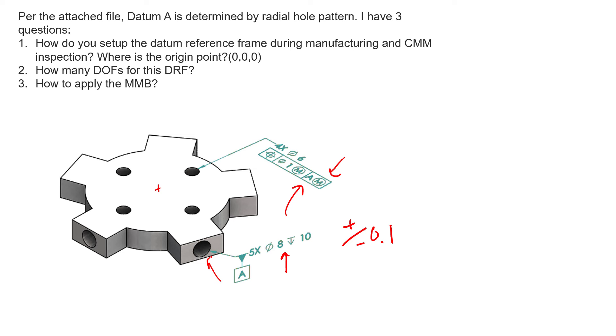The CMM is going to inspect and make sure that manufacturing accomplished this. If we look at this part here, let's ignore for now the MMB modifier. What the CMM is going to do is when you take a point cloud of each one of these cylinders, it's going to expand a cylinder inside that point cloud.